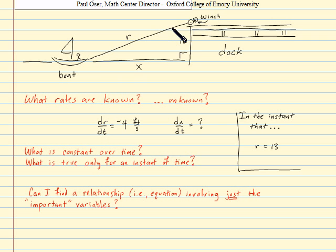So then for us, this question becomes, can I find an equation that involves just R and X, and maybe some constants? Well, look, don't we have a right triangle here? Don't we have some sort of relationship between the lengths of sides of a right triangle? Can't we use the Pythagorean theorem here? Well, sure we can. This squared plus this squared had better give me this squared. There's my equation. X squared plus 12 squared, or 144, equals R squared. So this gives me a relationship between these two variables.